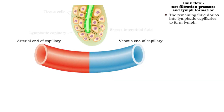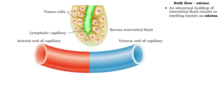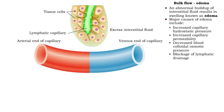The remainder drains into lymphatic capillaries to form lymph. An abnormal buildup of interstitial fluid results in swelling, known as edema. Edema is a symptom of increased blood hydrostatic pressure or capillary permeability, decreased blood colloid osmotic pressure, or a problem with normal lymphatic drainage.